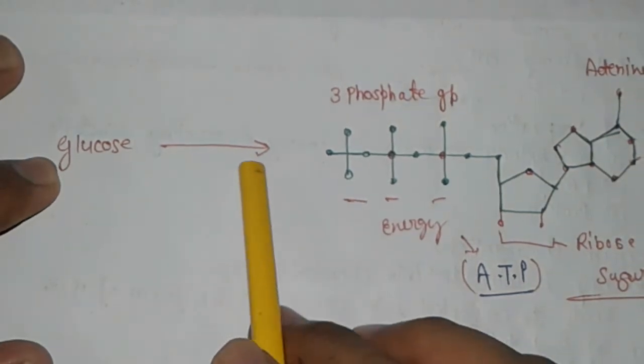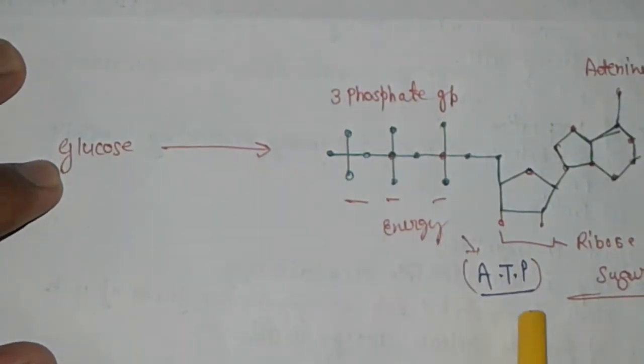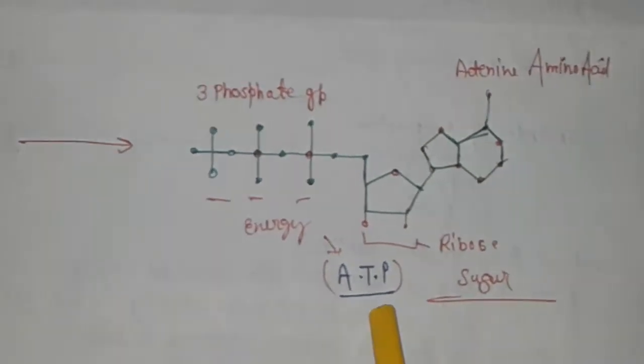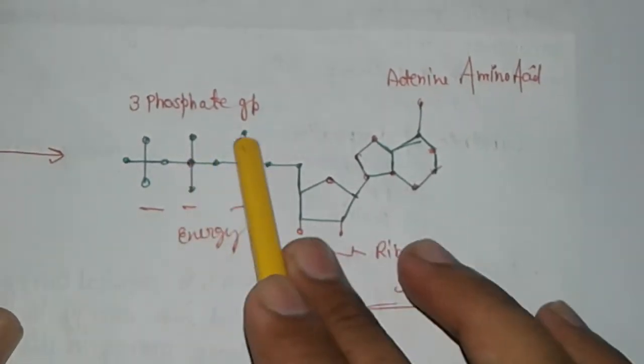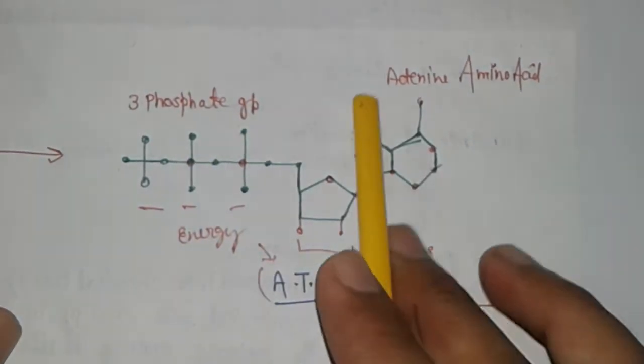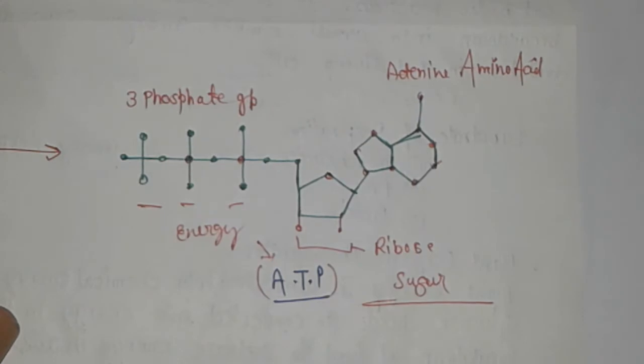Further we will discuss the breakdown of glucose and the energy molecule that is ATP. This has three phosphate groups, this is ribose sugar, and this is adenine amino acid.